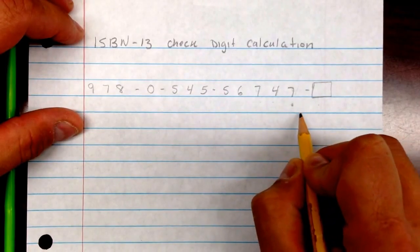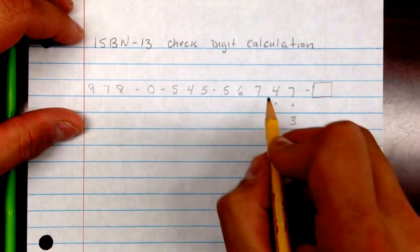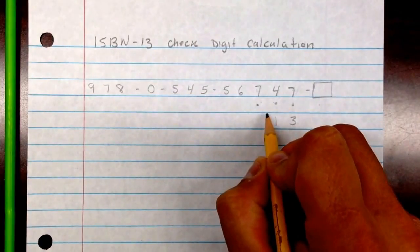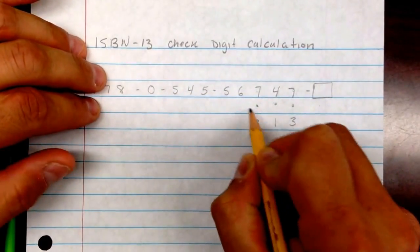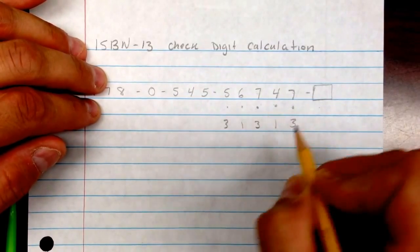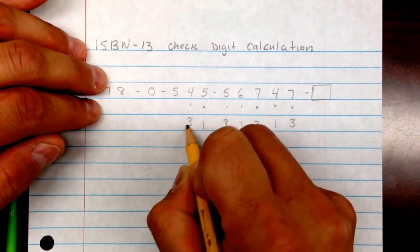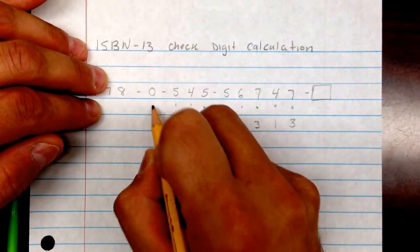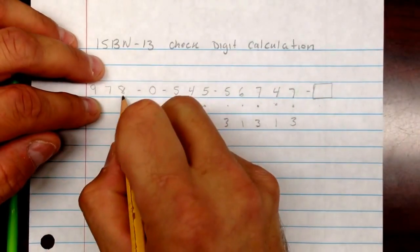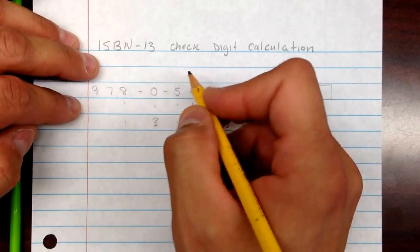We leave the check digit alone and just start multiplying this one by 3, then by 1 — which really doesn't do anything, it just leaves it — then by 3, then by 1, and so on. Just keep alternating as you go, including these last 3 over here too.